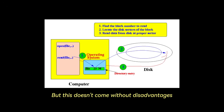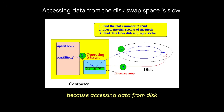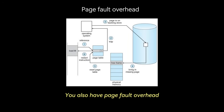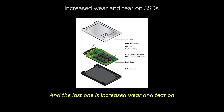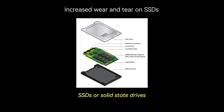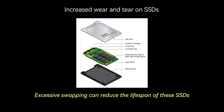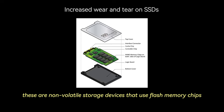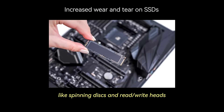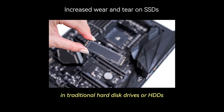But this doesn't come without disadvantages. You have slower performance, because accessing data from disk or the swap space is significantly slower than accessing RAM. You also have page fault overhead, where frequent page faults can lead to thrashing, with the system spending more time swapping pages than executing processes. The last disadvantage is increased wear and tear on SSDs. Excessive swapping can reduce the lifespan of SSDs — non-volatile storage devices that use flash memory chips instead of mechanical parts like spinning disks and read-write heads found in traditional HDDs.